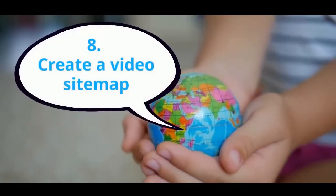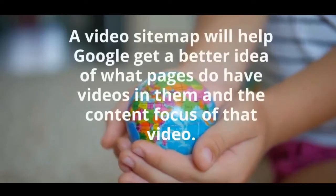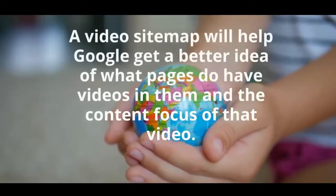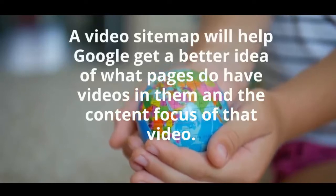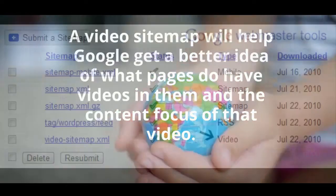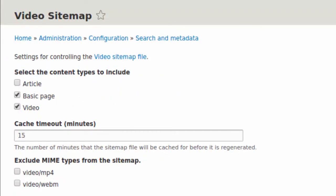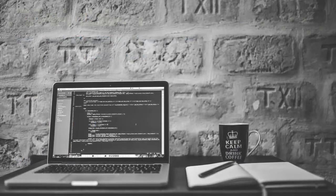Number 8: Create a video sitemap. A video sitemap will help Google get a better idea of what pages have videos in them and the content focus of that video. This is essential when you have created a large amount of video content published on your website. Having multiple videos can make it challenging to rank them, which is why creating a separate video sitemap can be very beneficial for you.